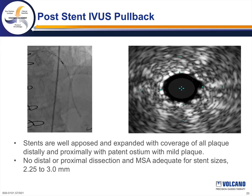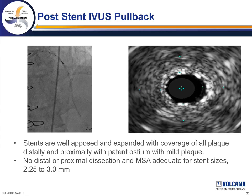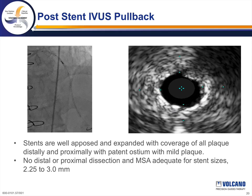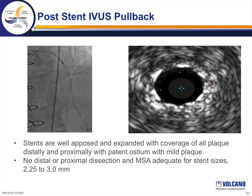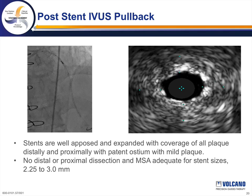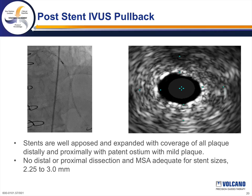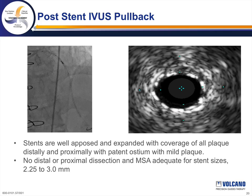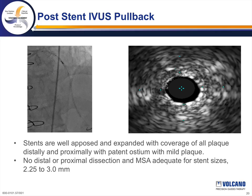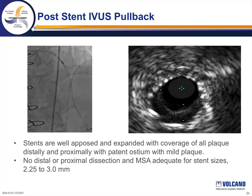The post-stent IVUS assessment showed no significant plaque distal to the most distal stent, with no edge dissection noted. The stents are well opposed to the vessel wall in the distal, mid, and proximal segments. The proximal stent shows no dissection, and the ostium of the LAD is patent with no impingement of the left main from our proximal stent. The minimum stent area in the distal, mid, and proximal stents is adequate for 2.25, 2.5, and 3.0 mm stents respectively.